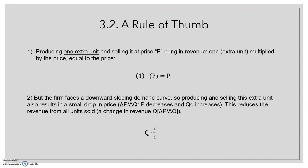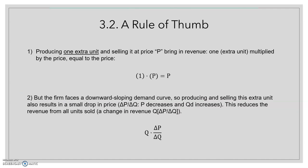This additional revenue has two components. The first component comes from producing one extra unit and selling it at a price p, which brings in revenue equal to p. If I multiply one unit by the price, the revenue will be exactly the price.